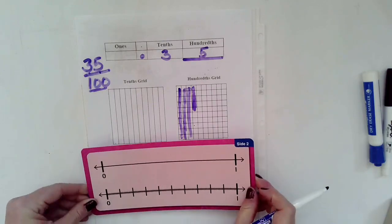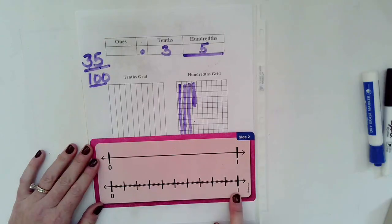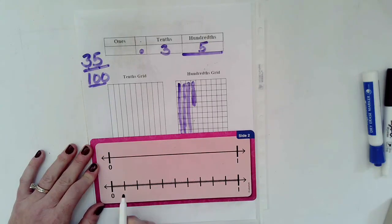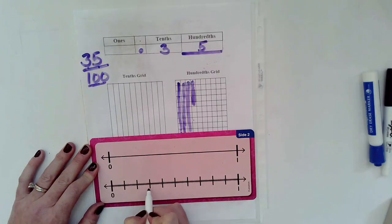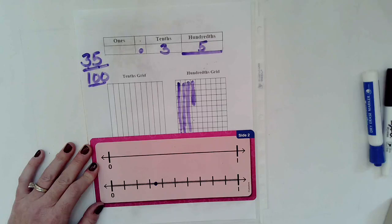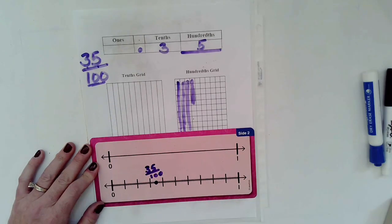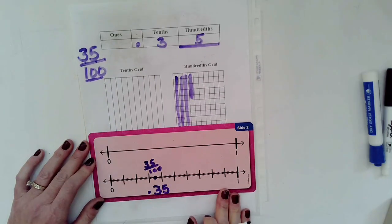We can also use a number line to help. This number line on the bottom is already broken into a hundred spaces. To find 35 hundredths, I count up by tens and then by fives: 10, 20, 30, and then five more — it would be right there. I could label it as 35 hundredths in fraction form or as 0.35 in decimal form.